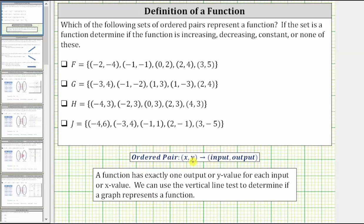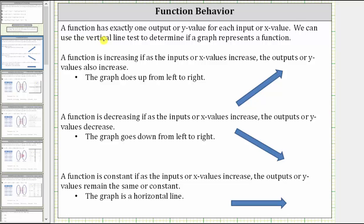Let's begin by reviewing the definition of a function, as well as the definitions of increasing, decreasing, and constant functions. A function has exactly one output, or y value, for each input, or x value. And we can use the vertical line test to determine if a graph represents a function.